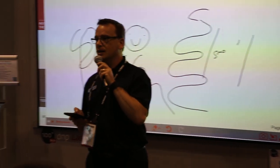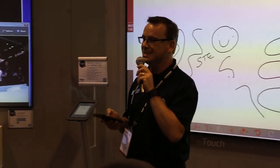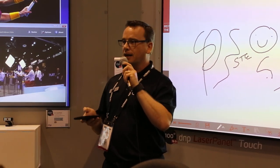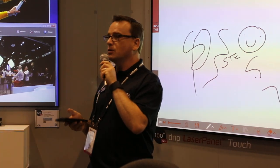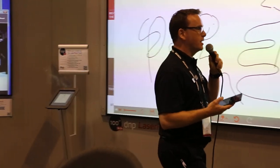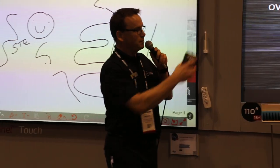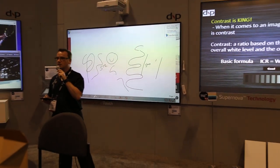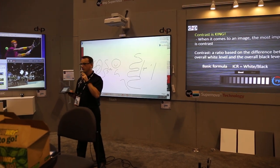When it comes to image, contrast is the king. Whether it's a color image or a black-and-white image — if you fully saturate any color, you get black; if you take it all the way away, you get white. So without contrast, you don't get an image. There's nothing there to see. The proper term for contrast is ICR — image contrast ratio.